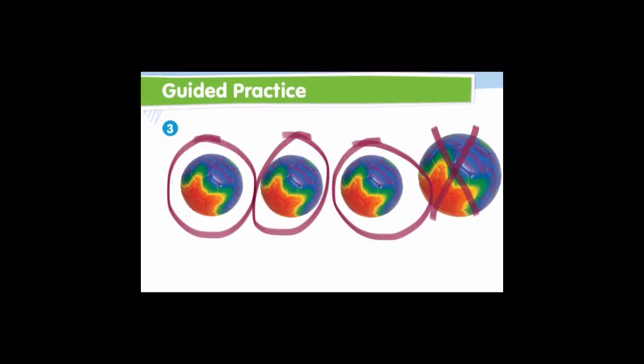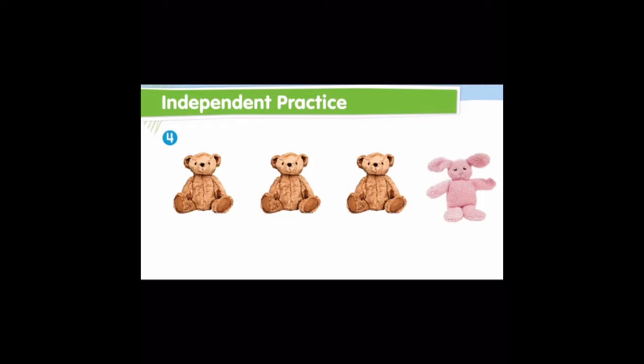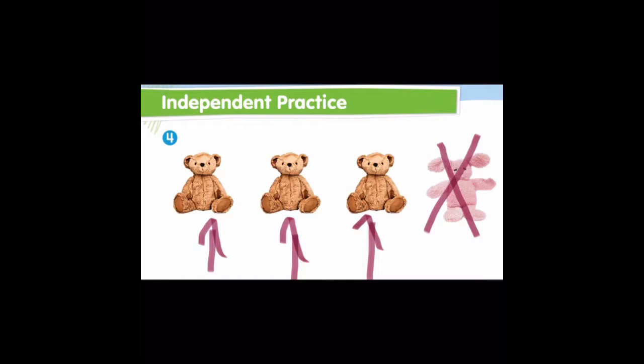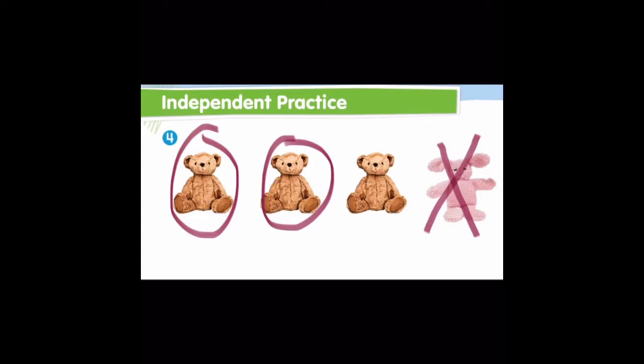Now take a look at this row. Which stuffed animal is different than the others? Good job — this one here is different, so we are going to put an X. These three stuffed bears are alike, so we are going to circle them. What makes this stuffed animal different? It is a stuffed rabbit and it's pink, and these three here are all stuffed brown bears.